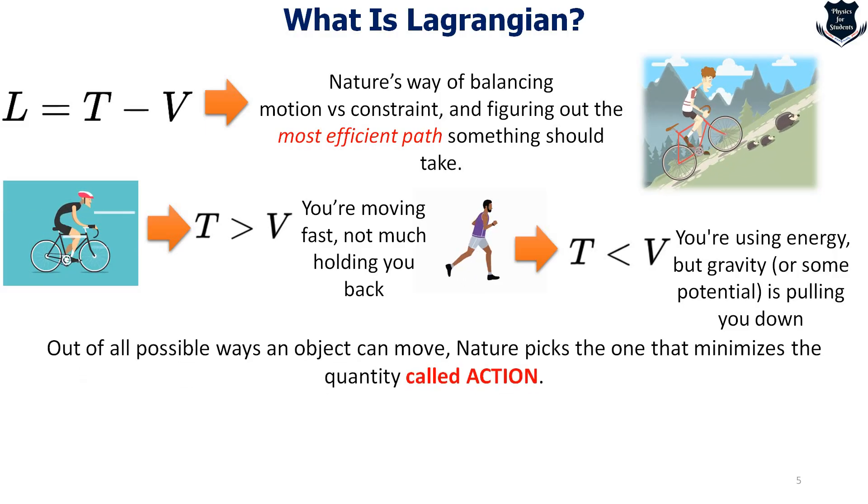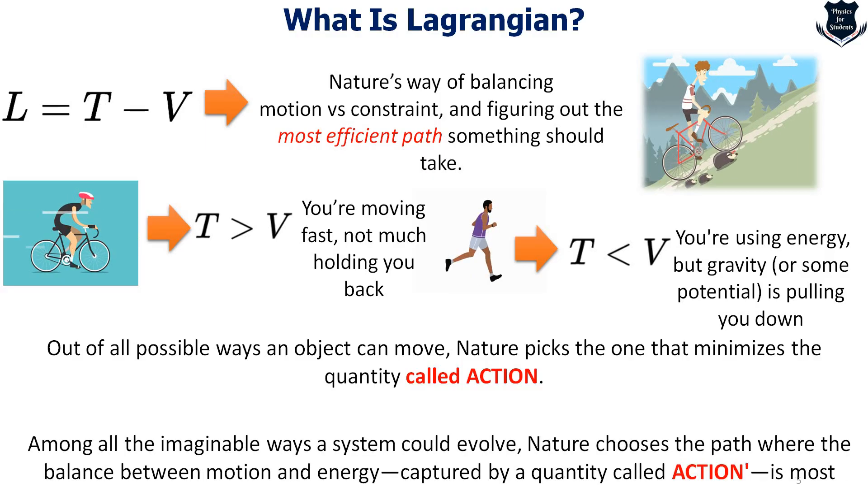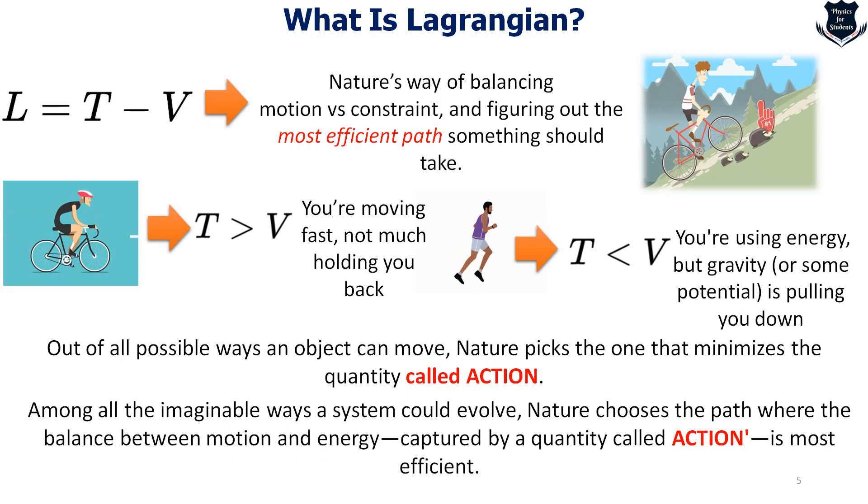To tell in simple words, out of all the possible ways in which an object can move, nature picks the one that minimizes what is called an action. Or we can also say among all the imaginable ways a system could evolve, nature will choose the path where the balance between motion and energy is captured by a quantity called action, and it is most efficient and nature will take that path.